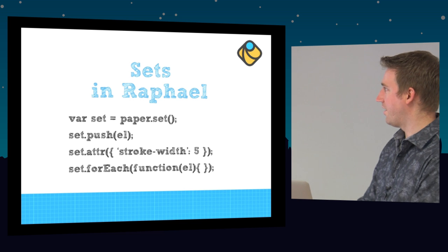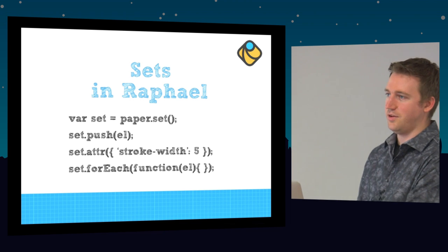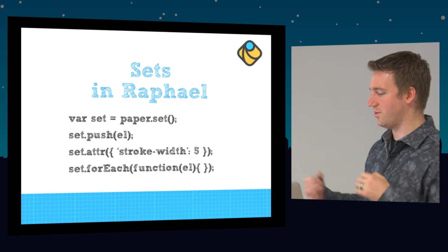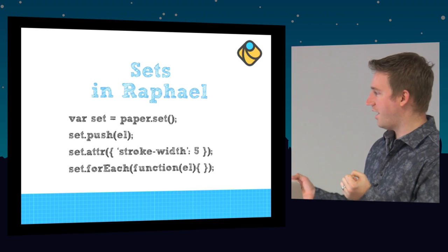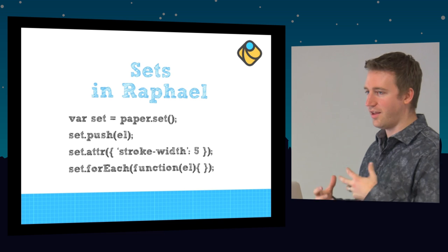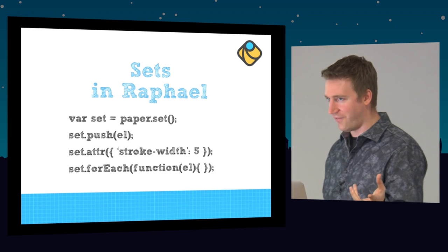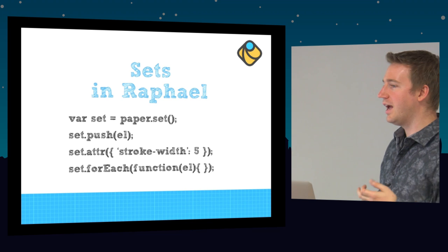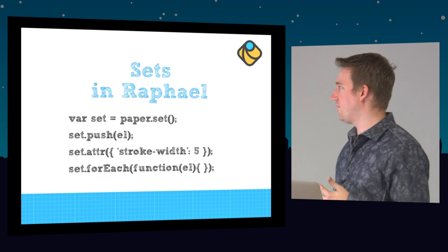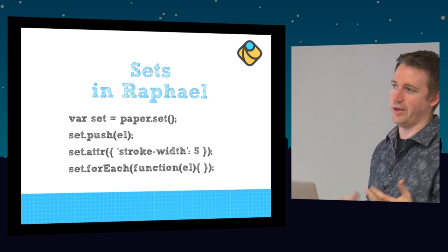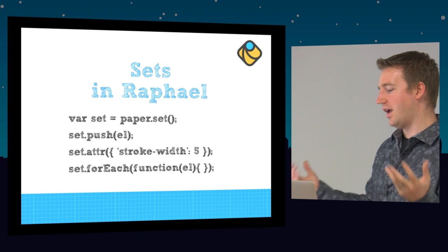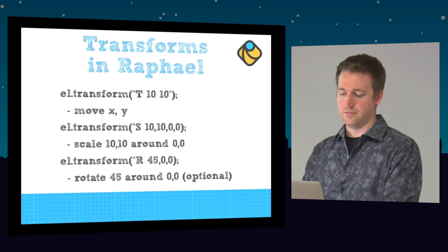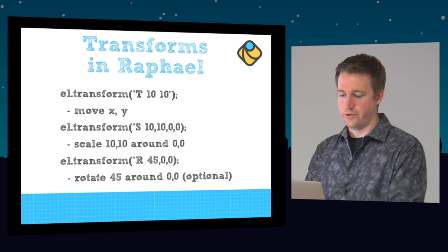Sets in Raphael — a set is essentially what a group is. I create a set and push elements into it, then call set.attr with stroke-width 5 to set all elements' stroke width to 5 in the set. I can iterate over the set using set.forEach, getting each element in the callback to set properties.